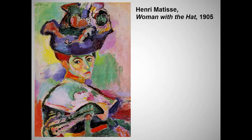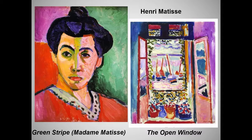Here again we see color liberated from descriptive reality — not even Parisian women sport green noses. Like Cézanne, Matisse uses color patches, advancing warm colors and receding cool colors to create a perception of depth while still embracing the essentially two-dimensional quality of painting. Note the expressive use of bold color and what his critics called an unfinished look, with boldly outlined figures.